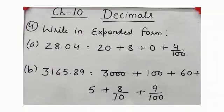Look at question number 4. Write in expanded form. 28.04. 28 is a whole number, so the place value of 28 is 20 plus 8. 0.04 is a decimal number. The place value of 0 will be 0 by 10 or 0, and the place value of 4 is 4 by 100.